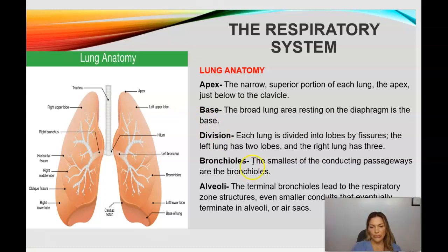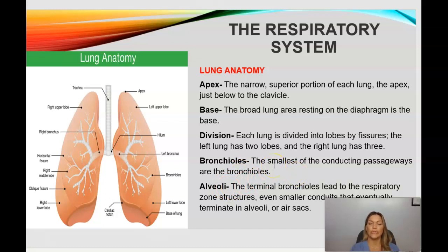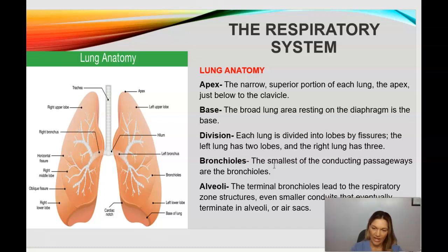Then we have the bronchioles, which are the smallest of the conducting passageways. The terminal bronchioles lead to what are called the respiratory zone structures — even smaller conduits that eventually terminate into the alveoli, or air sacs.